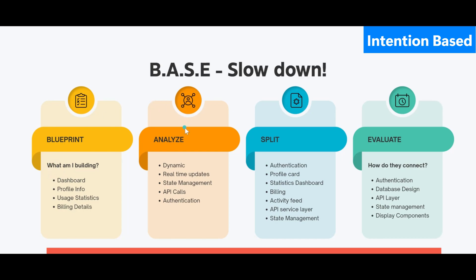Next, analyze if it's static or dynamic. This is a user activity dashboard, so it will be dynamic. That bifurcation helps me narrow down that I need real-time updates, state management, API calls, and authentication. With that information, let's split the system into components: authentication, profile cards, statistics dashboard, billing, activity feed, API service layer, and state management. Seven components — seven focused prompts.